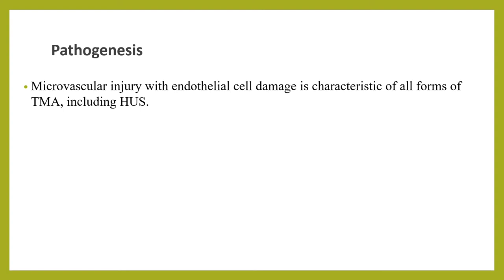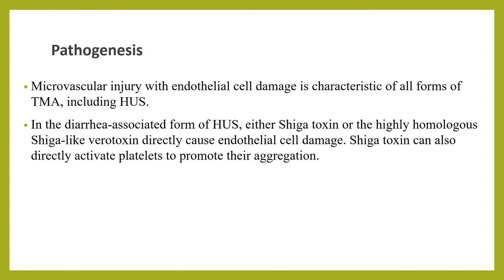When we see the pathogenesis of hemolytic uremic syndrome, microvascular injury with endothelial cell damage is the characteristic of all forms of thrombotic microangiopathy, including HUS. In the diarrhea-associated form, enteropathic organisms produce either Shiga toxin or the highly homologous Shiga-like verotoxin. These toxins are absorbed from the colonic mucosa into the systemic circulation after the colonic mucosa is damaged by bacteria, then bind to endothelial cells in the glomerulus causing direct endothelial cell damage. Shiga toxin can also directly activate platelets to promote their aggregation. Mechanical injury to red blood cells passing through the thrombotic microvasculature results in severe non-immune anemia with a negative direct Coombs test.